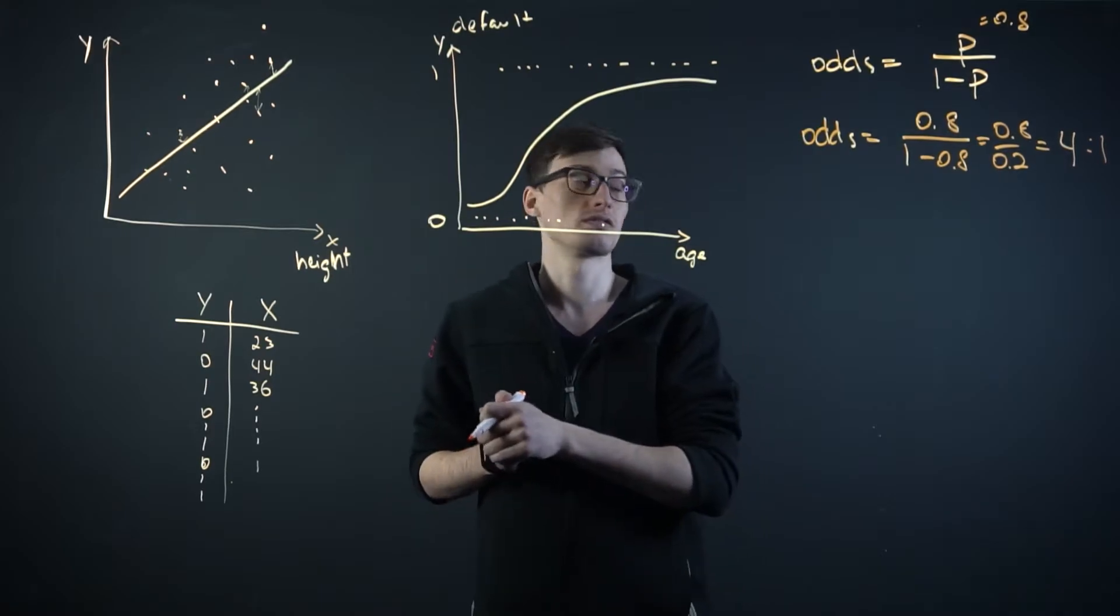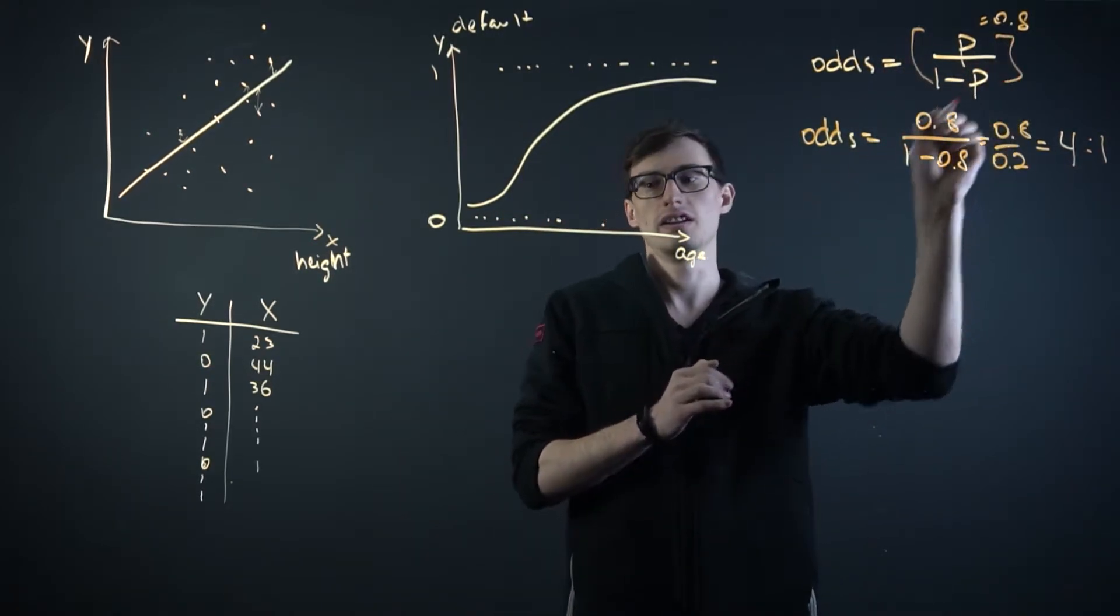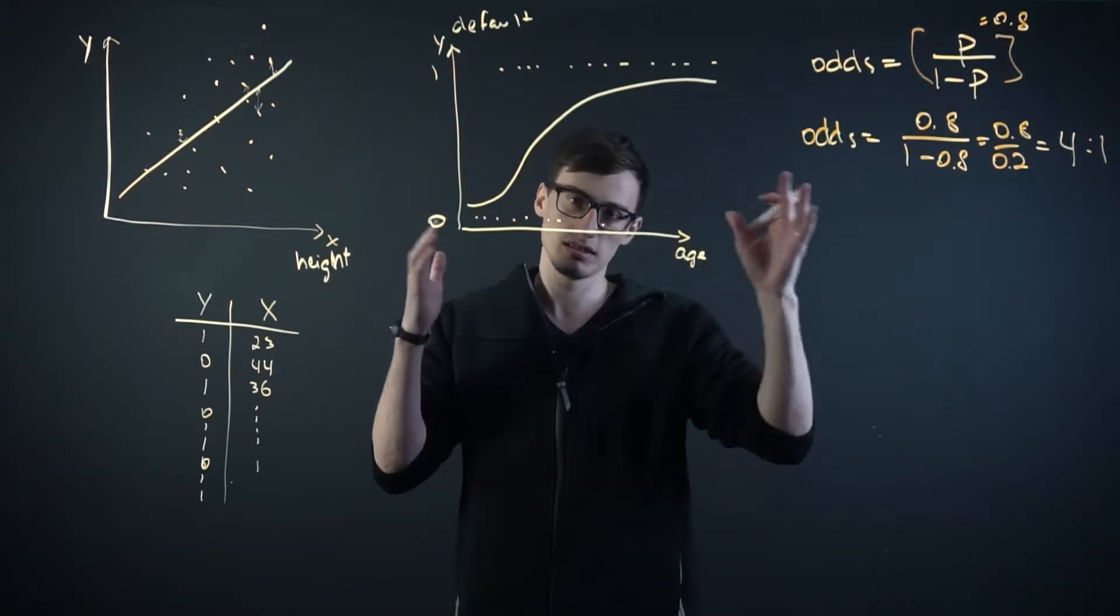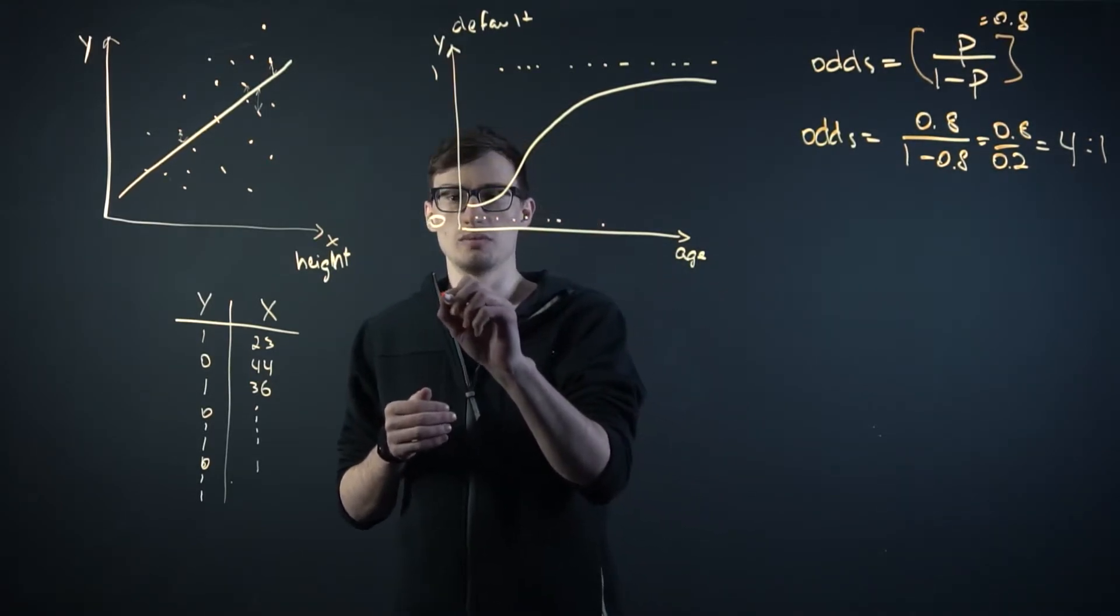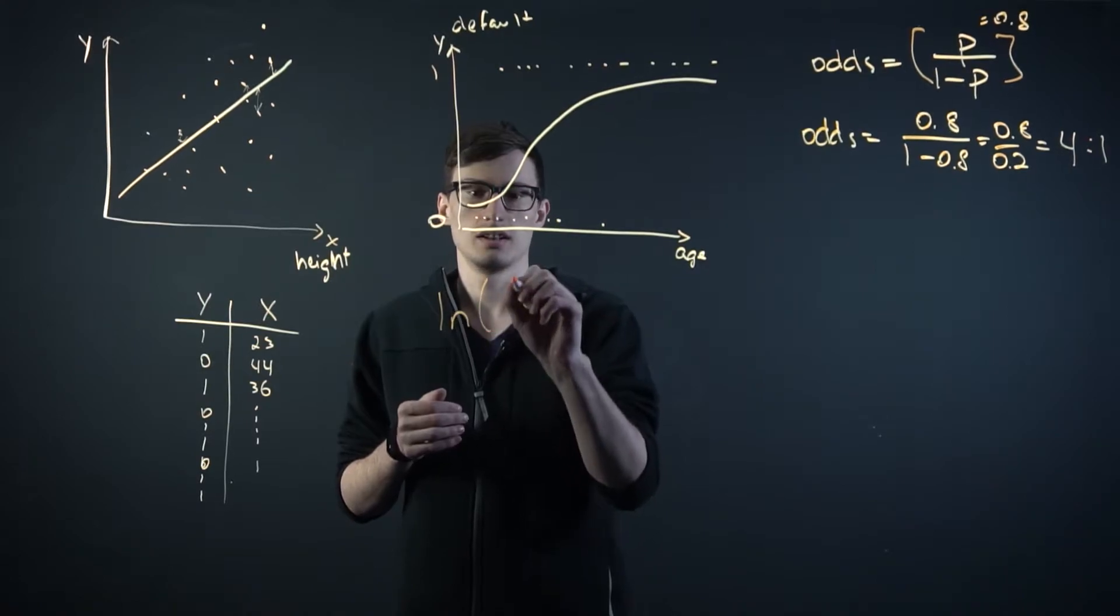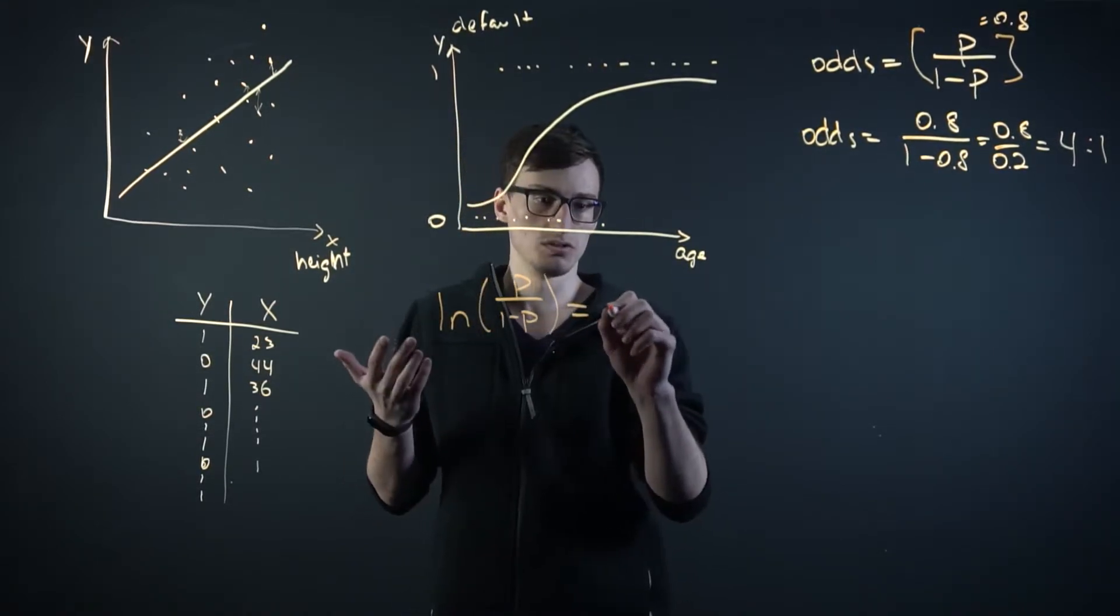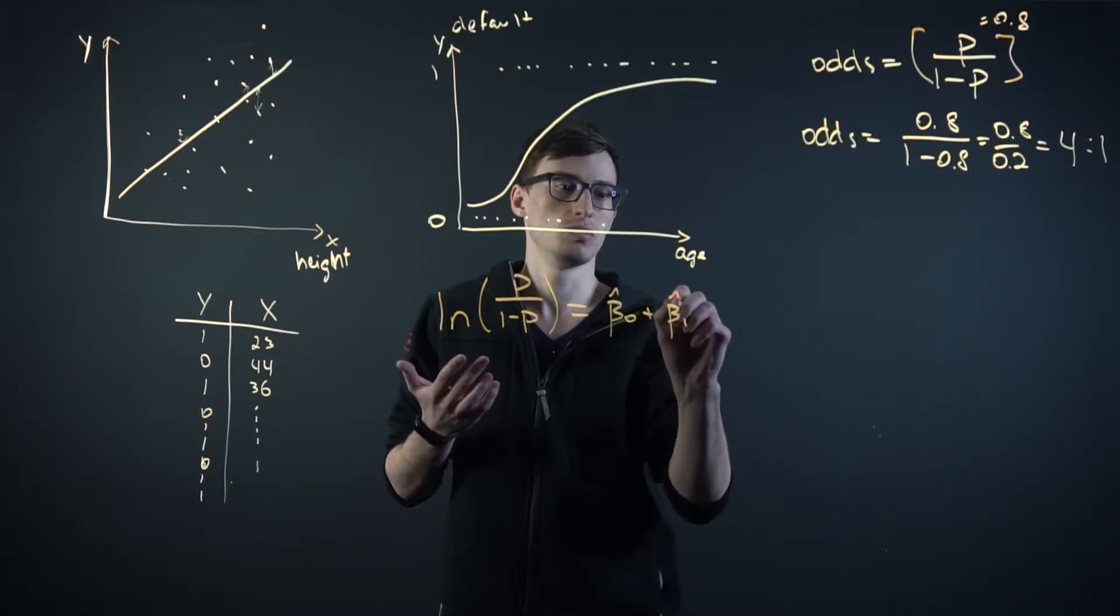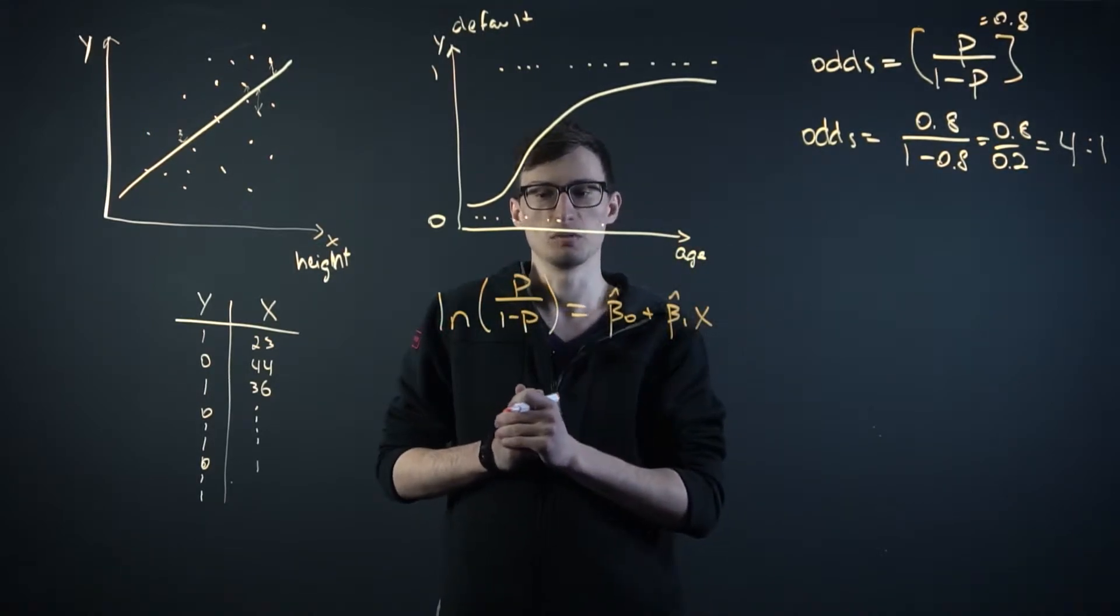Now, here's where the logistic regression comes into play. We take the log of this right here. Now, in different cases, you'll see log base different values. But in our case, let's just take the natural log, log base e. So it would be ln of p over 1 minus p. And this equals to, just like before, beta 0 plus beta 1 x, where the x is the variable, the independent variable.